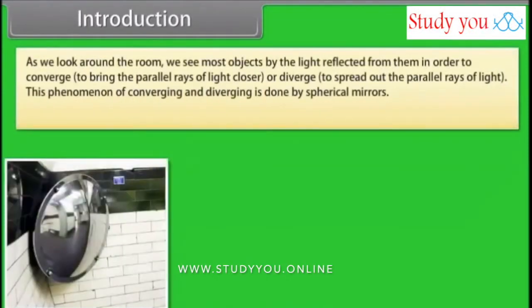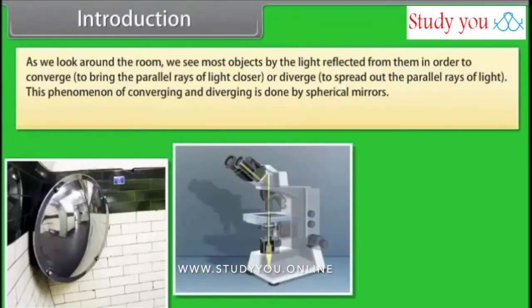As we look around the room, we see most objects by the light reflected from them. In order to converge — to bring the parallel rays of light closer — or diverge — to spread out the parallel rays of light — this phenomenon of converging and diverging is done by spherical mirrors.